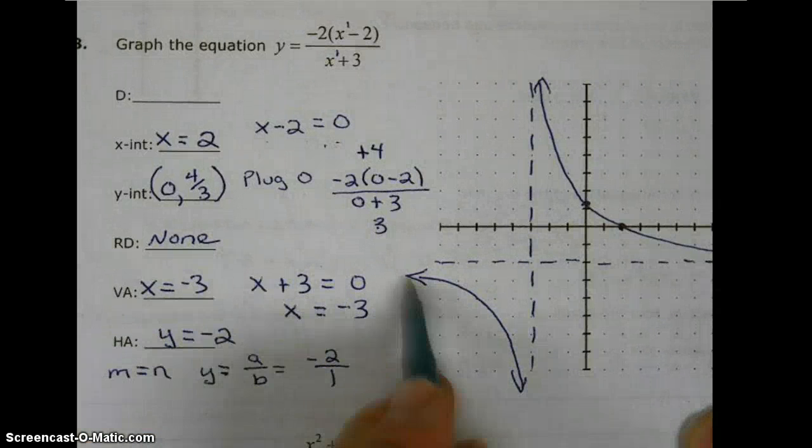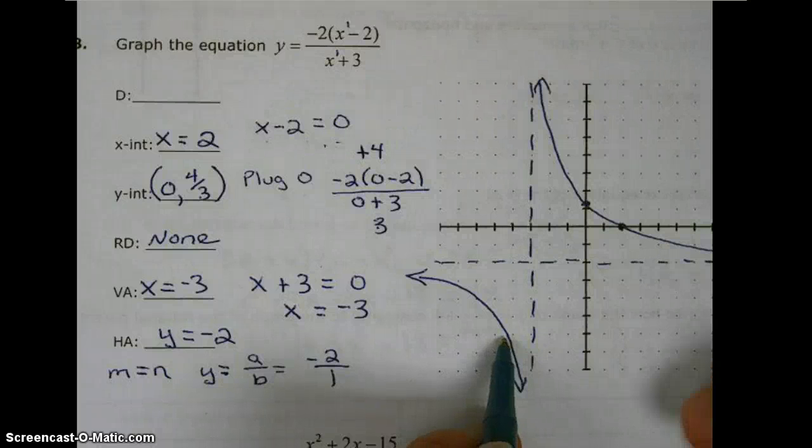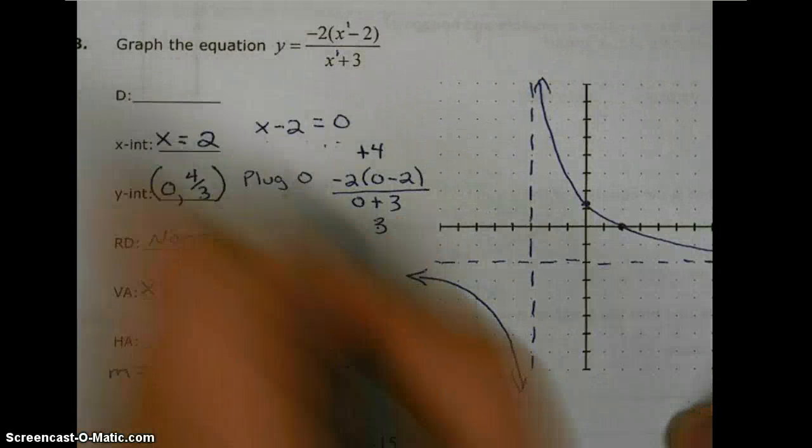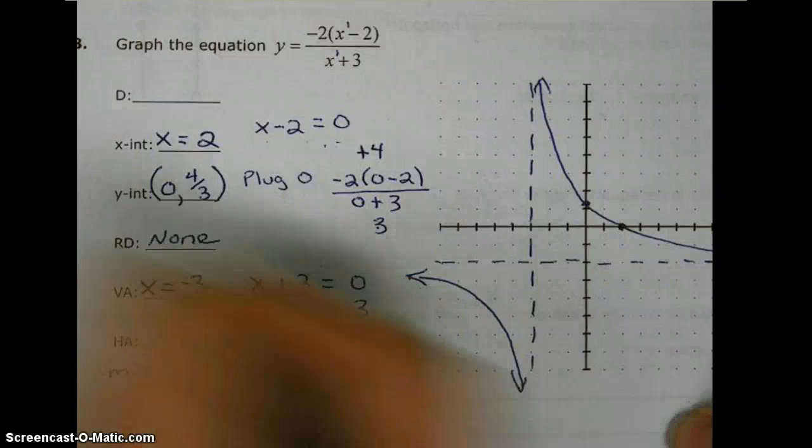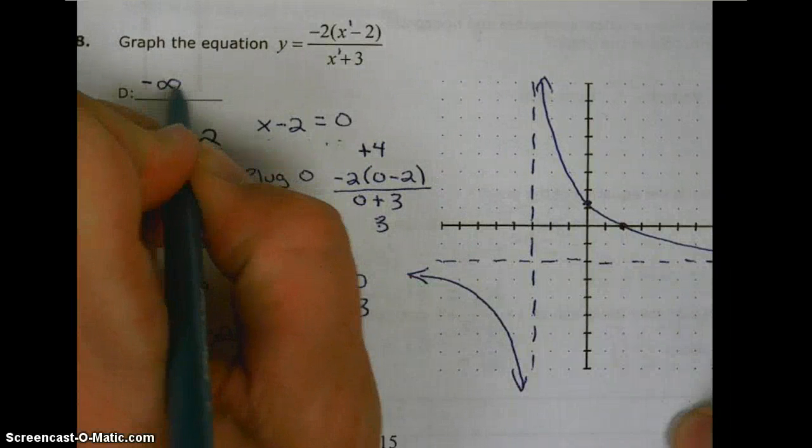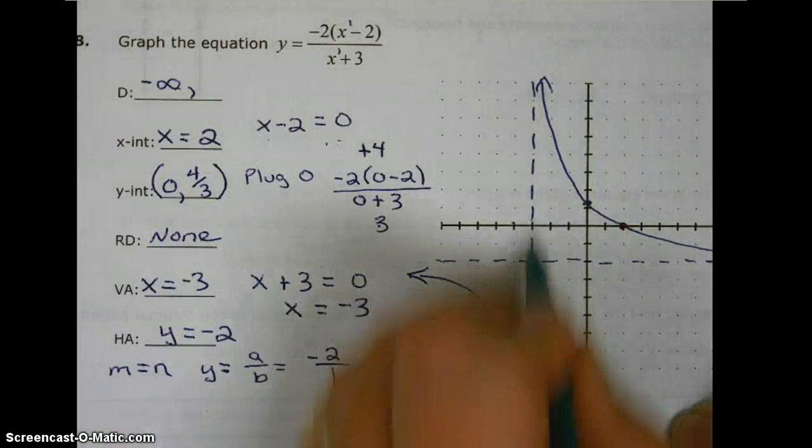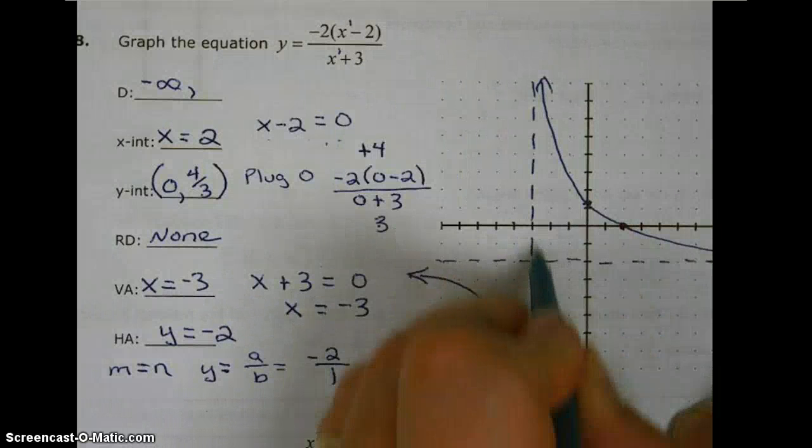And you can get some specific points off of your table and your calculator if you'd like. So the domain is going to go from negative infinity on the left. It's going to have an asymptote at negative 3.